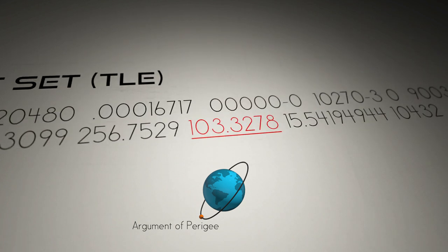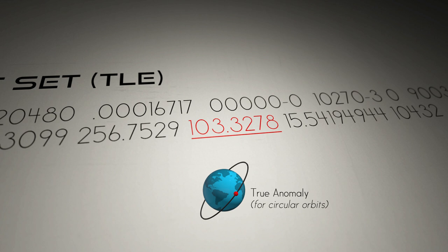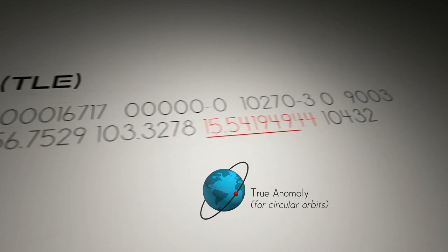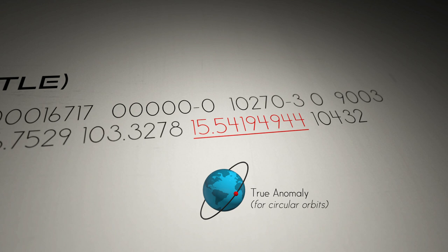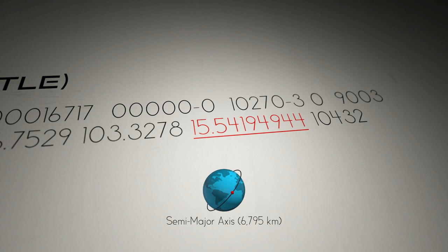Then, mean or true anomaly — the satellite's location for the given epoch time — is 103.3 degrees. In TLEs, the semi-major axis is hidden in the next number called mean motion. For this TLE, mean motion is 15.5 revolutions per day, meaning the object will orbit the Earth 15.5 times in a day. With this knowledge, we can determine the period of the orbit by dividing 24 hours, or 86,400 seconds, by 15.5 revolutions per day, giving us a period of 5,574 seconds, or roughly 93 minutes. Using Kepler's third law, we can determine that the semi-major axis is 6,795 kilometers.